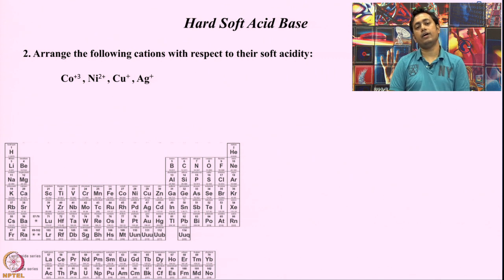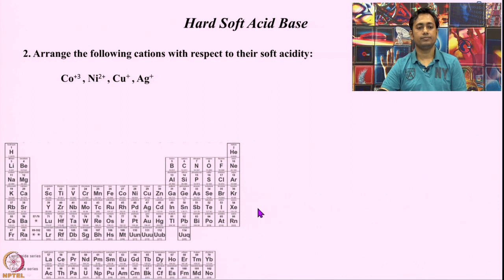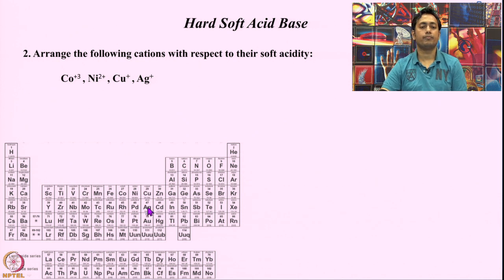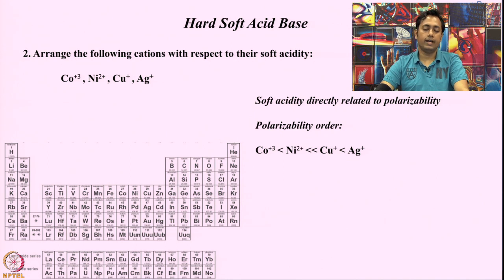Now instead of anions, we take a range of metal ions: Co³⁺, Ni²⁺, Cu⁺, and Ag⁺. The first three — Co³⁺, Ni²⁺, and Cu⁺ — are in the same period, and Ag⁺ is in the same group as copper. The soft nature of an acid or base directly correlates with polarizability, which is connected with charge density — depending on the amount of charge and the overall volume.